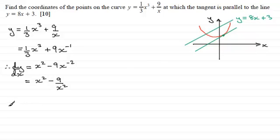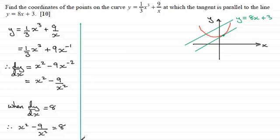So we now know that at this point here the gradient has got to match the gradient of the line which is 8. So we say that when dy/dx equals 8, what we've therefore got is that x squared minus 9 divided by x squared, well that must equal 8. And it's just a question now of solving this equation.